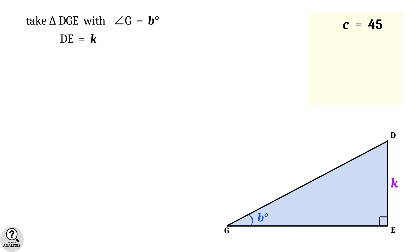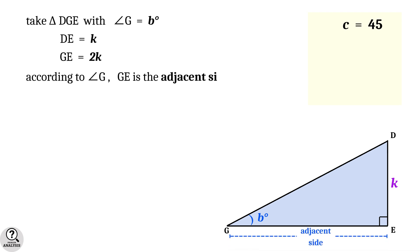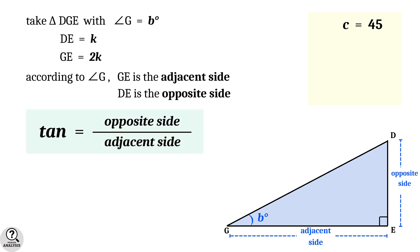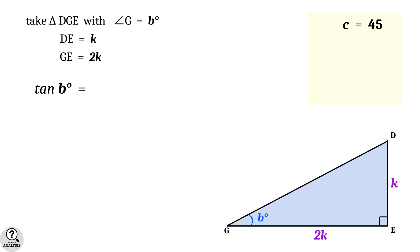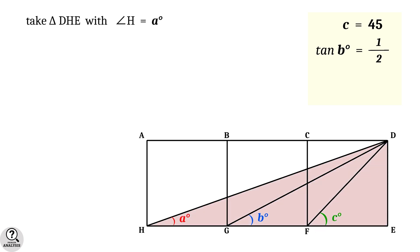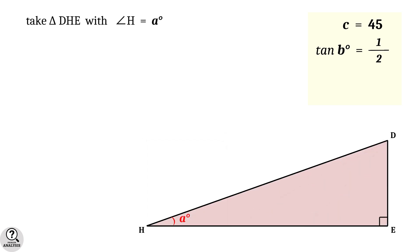Now take triangle DGE with angle G equal to b degrees. We have DE equal to k and GE equal to 2k. According to angle G, GE is the adjacent side and DE is the opposite side. In trigonometry, tan of an angle equals opposite divided by adjacent, so tan b equals DE divided by GE, which equals k divided by 2k, giving tan b equal to 1/2.